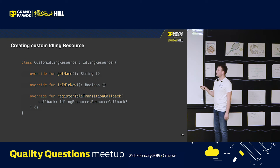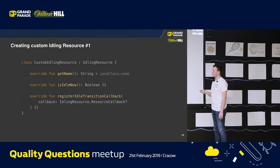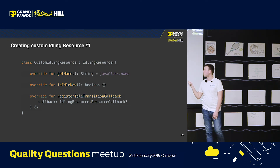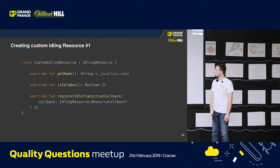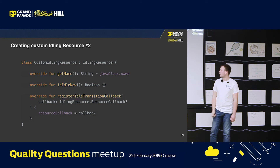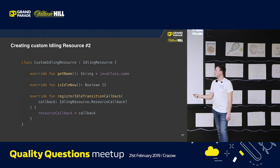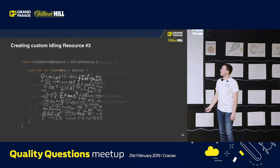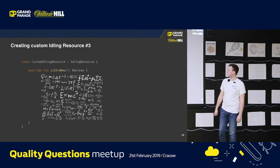You will need to overwrite three methods. The first method is very generic — it's some string, you can use class name, you can use some object hash, etc. The last one is also generic — you just assign a variable. The main thing goes in the middle: checking if your action has finished and if your application state is idle. That's where the main complicated logic goes.